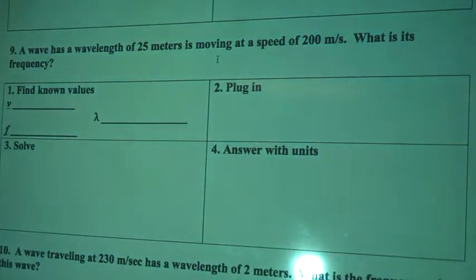So number nine, a wave has a wavelength of 25 meters. It's moving at a speed of 200 meters per second. What is its frequency?